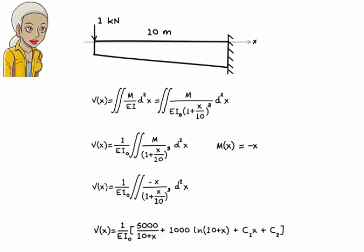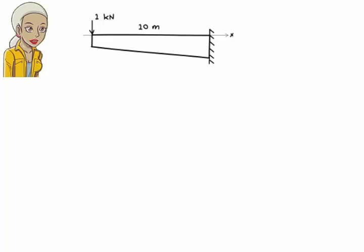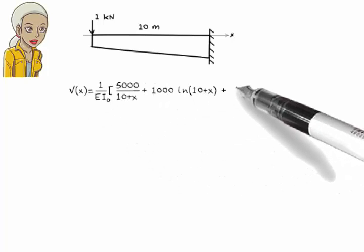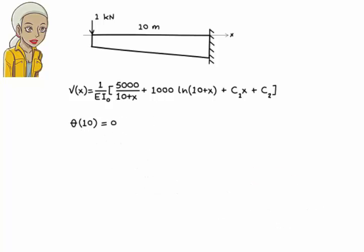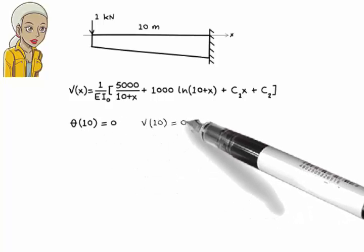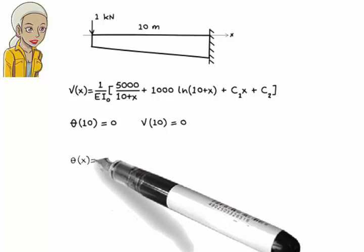To determine the integration constants c₁ and c₂, we need two boundary conditions. We know that slope and deflection at the fixed support are 0. So we can write θ at 10 equals 0 and v at 10 equals 0. θ can be obtained by differentiating v with respect to x.